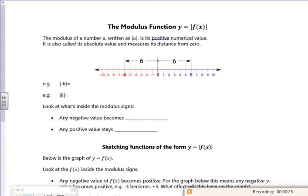It's a positive numerical value, its absolute value, its absolute distance from zero. So the modulus of minus six is just six. The modulus of six is just six.